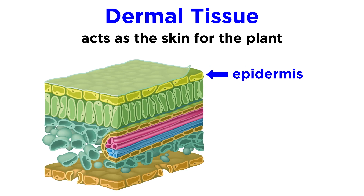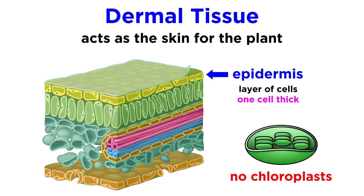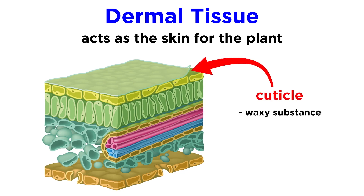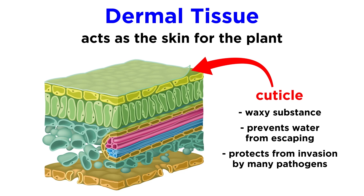A plant's skin is called the epidermis, and it's a layer of cells only one cell thick. Most of these cells don't have chloroplasts or other specialized organelles; they're primarily there just to serve as a protective layer, to shield the more important tissues beneath. As extra protection, most epidermal tissues secrete a waxy substance called cuticle that prevents excess water from escaping the plant, and also protects the plant from invasion by pathogens like fungi and bacteria. This cuticle is one of the main evolutionary advantages that land plants exhibit over their aquatic ancestors.